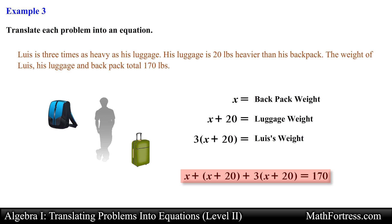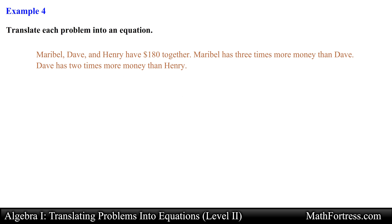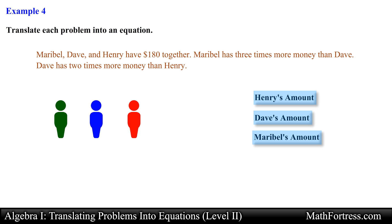When dealing with multiple unknowns the procedure is essentially the same — just be a bit more careful and make sure you relate the correct unknowns with one another. Let's go over the next example. Maribel, Dave, and Henry have 180 dollars together. Maribel has three times more money than Dave. Dave has two times more money than Henry. Similar to the previous problem, we first need to identify all unknown quantities — in this case the amount of money each person has, giving us three unknowns.